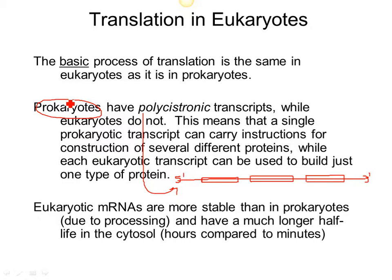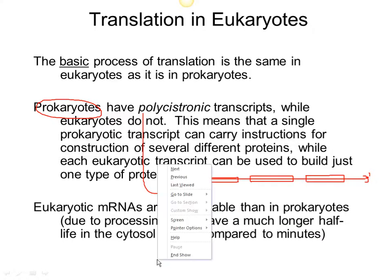Another difference is that eukaryotic mRNAs last longer in the cell than prokaryotic mRNAs, and therefore they can produce more protein product by translation. Eukaryotic mRNAs can last hours compared to minutes for bacteria, so that's another difference in terms of translation.